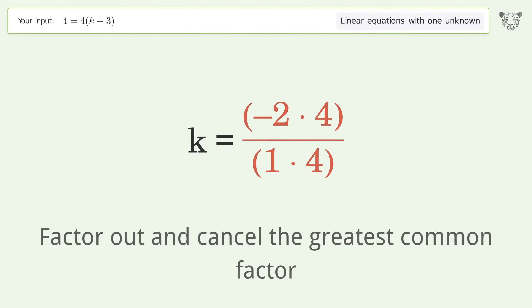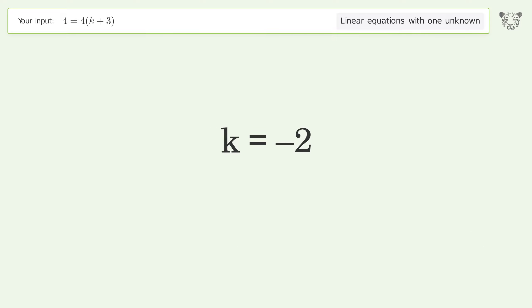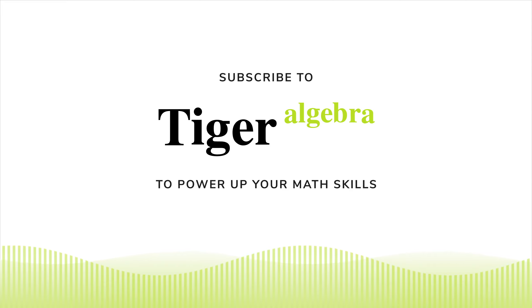Find the greatest common factor of the numerator and denominator. Factor out and cancel the greatest common factor. And so the final result is k equals negative 2.